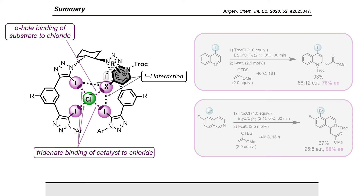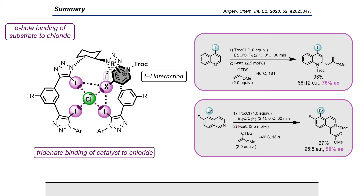With this, we were able to reach up to 76% ee in the quinoline de-aromatization and up to 90% ee in the isoquinoline de-aromatization, which is almost threefold higher than the previously reported enantioselectivities via purely halogen bonding catalysis.